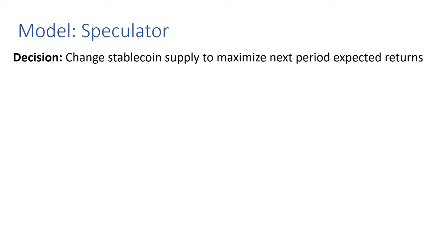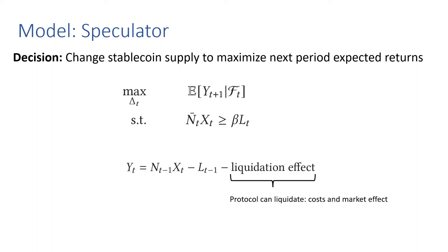The speculator's decision is to change the stablecoin supply to maximize their next-period expected returns — essentially deciding the issuance of the stablecoin. Formally, the speculator's value process Y includes a liquidation effect, where the protocol can liquidate the speculator's position, and this has costs and market effects.